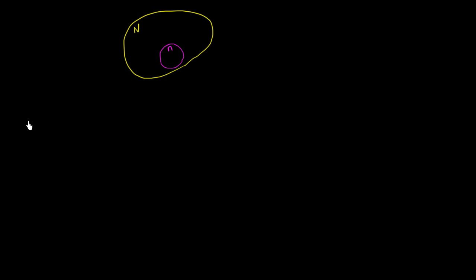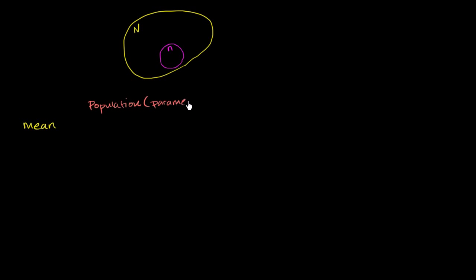The first is the idea of the mean. If we're trying to calculate the mean for the population, that's going to be a parameter. When we calculate something for a sample, we would call that a statistic.